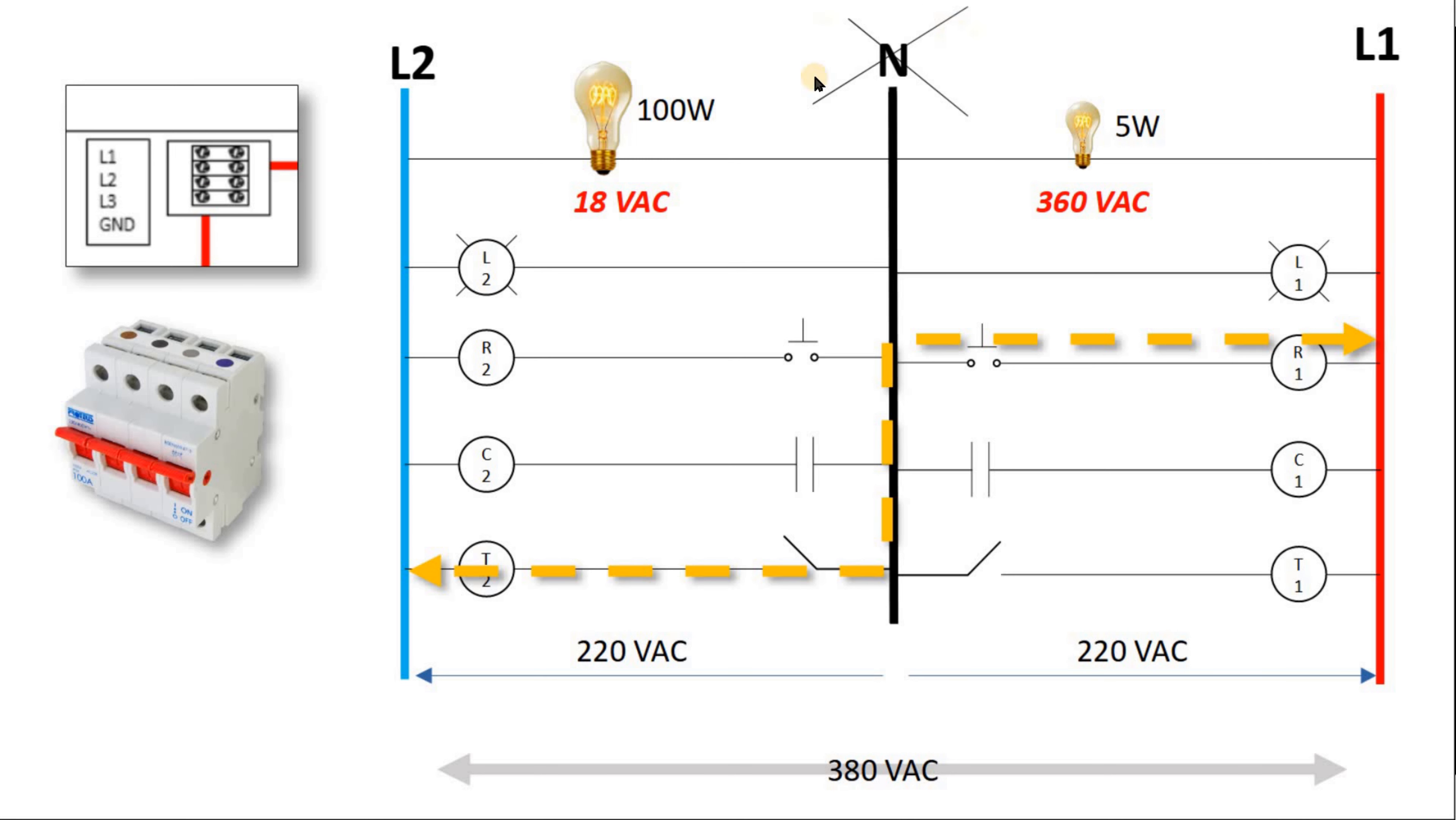So in some cases, what happens is that he loses the neutral, and phase 1 and phase 2 are feeding some kind of equipment. Whatever those equipment are, he is feeding them in series. And that is what actually happened and what has blown your fuse and destroyed our PLC.